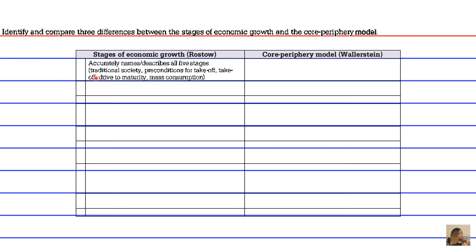The first difference is the actual conception of each model. Rostow describes all five stages: the traditional society, the preconditions for takeoff, the actual takeoff (the growth of the economy), the drive to maturity, and then the age of mass consumption. Wallerstein, on the other hand, described three parts of the system: the core, the surrounding periphery, and the semi-periphery.